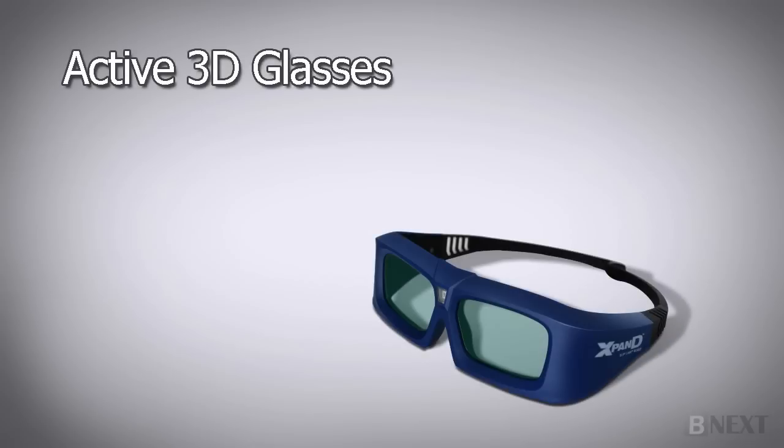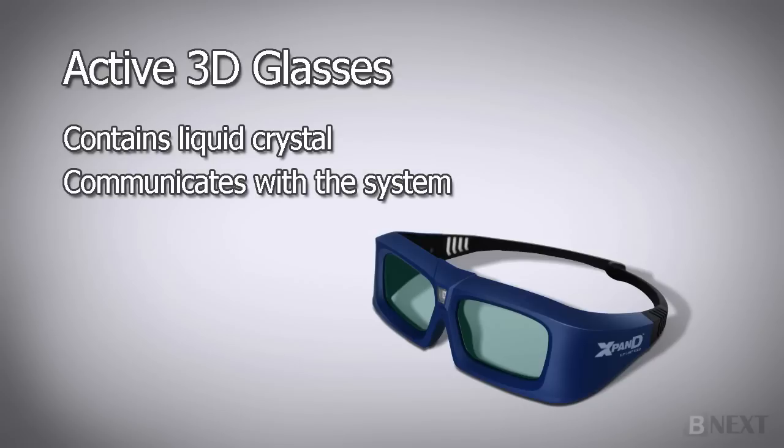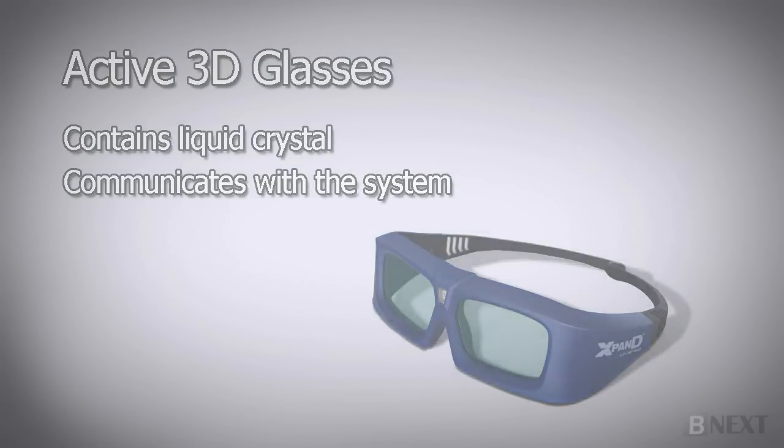Active shutter 3D glasses are commonly used with 3D TVs, 3D projectors, and in some cinemas. Each lens contains transparent liquid crystal that turns black once a voltage is applied, blocking one of the eye's sight at a time. The glasses get instructions from the emitter or screen to darken each lens at the right time, while the screen presents a different movie image to the unblocked eye for the completion of the illusion.